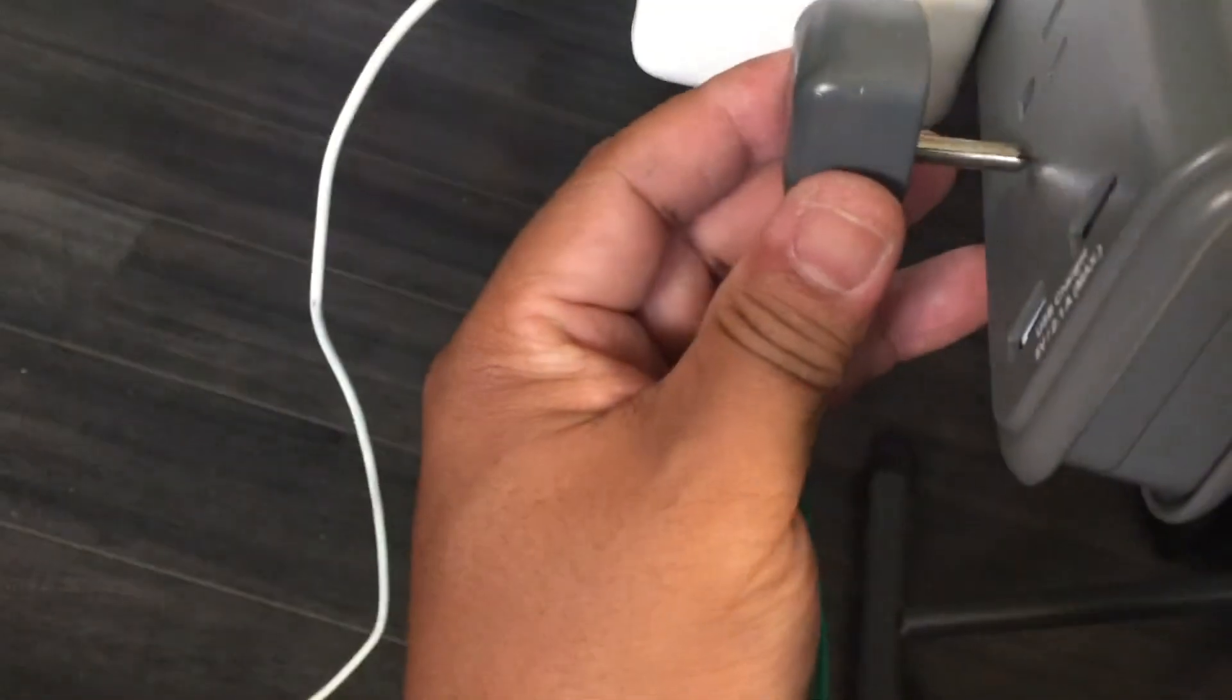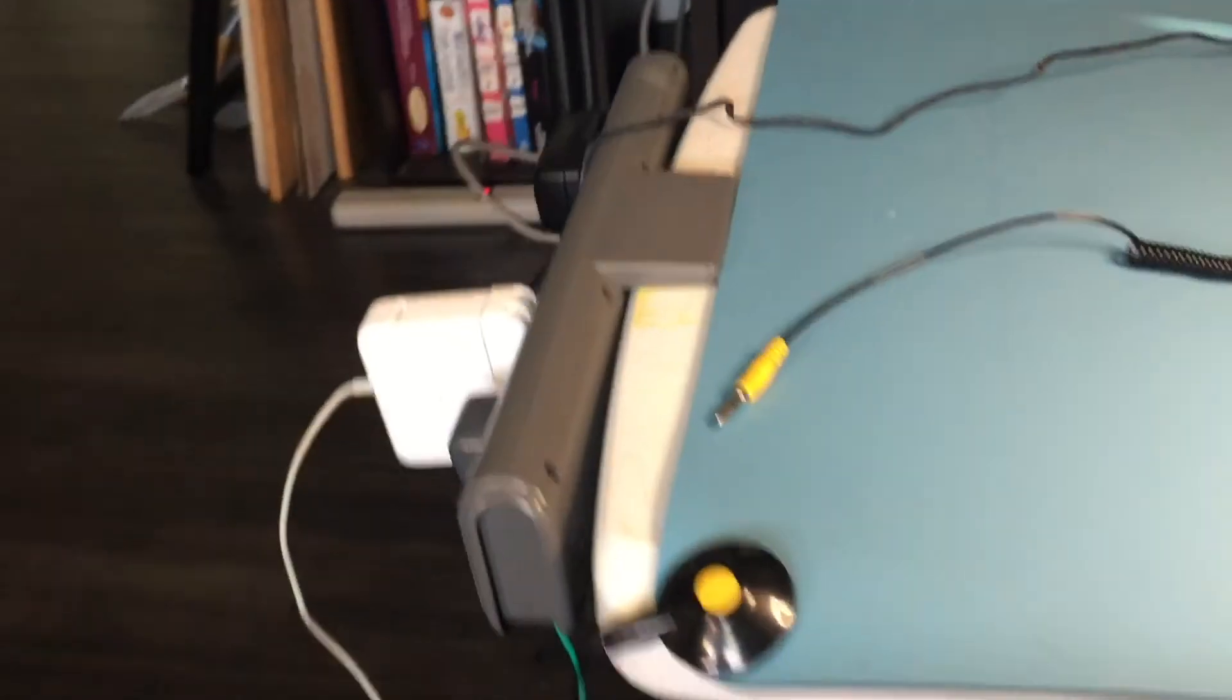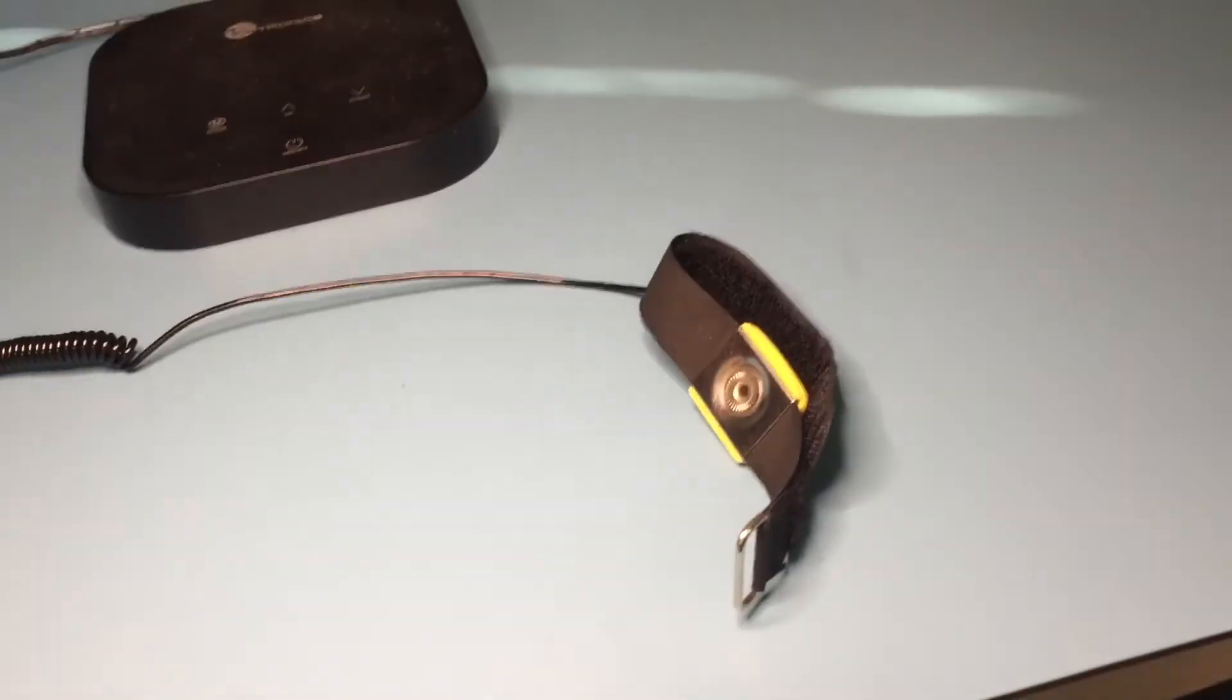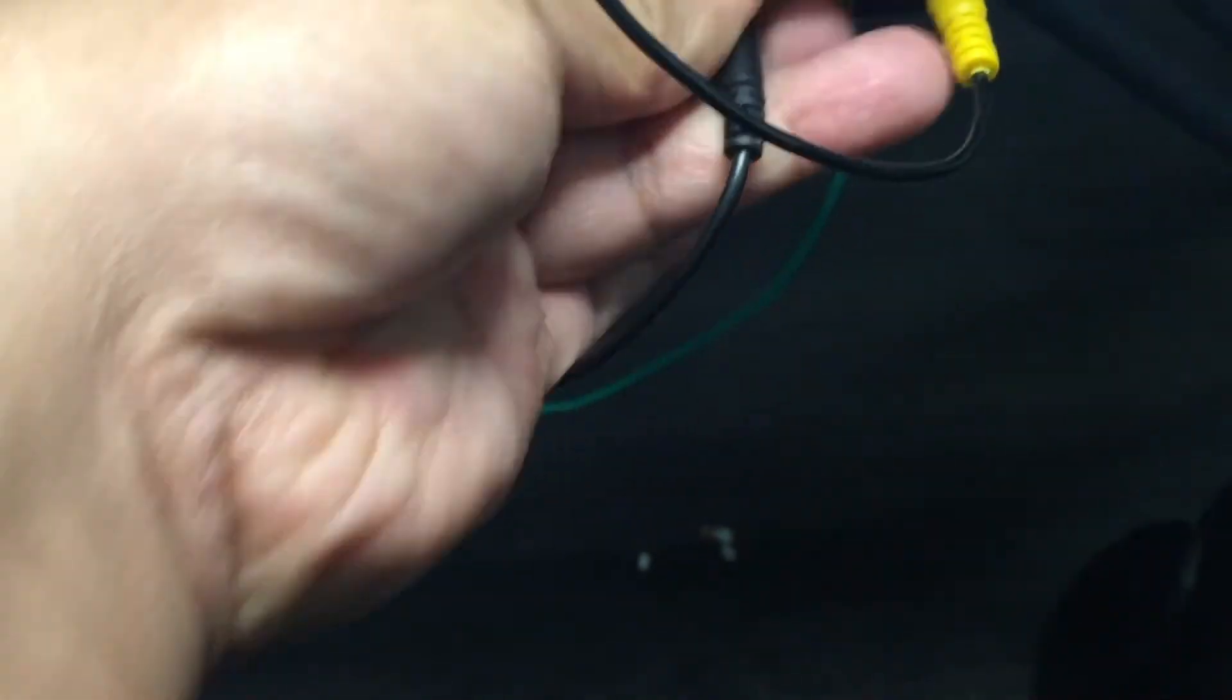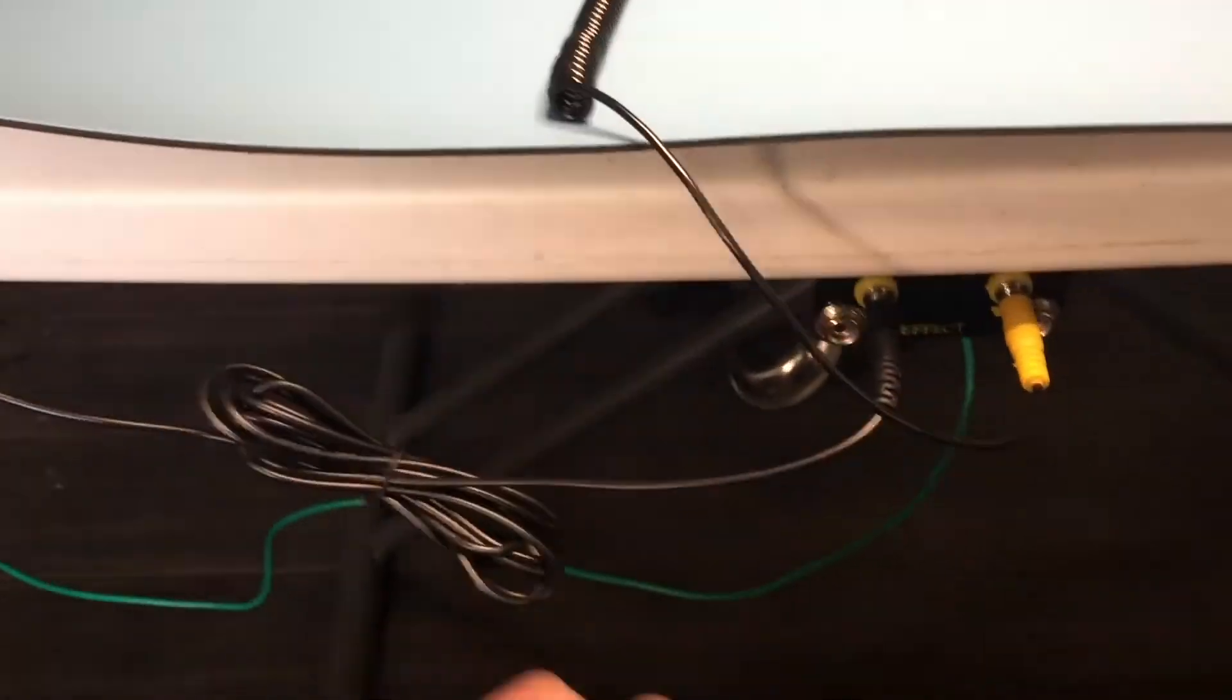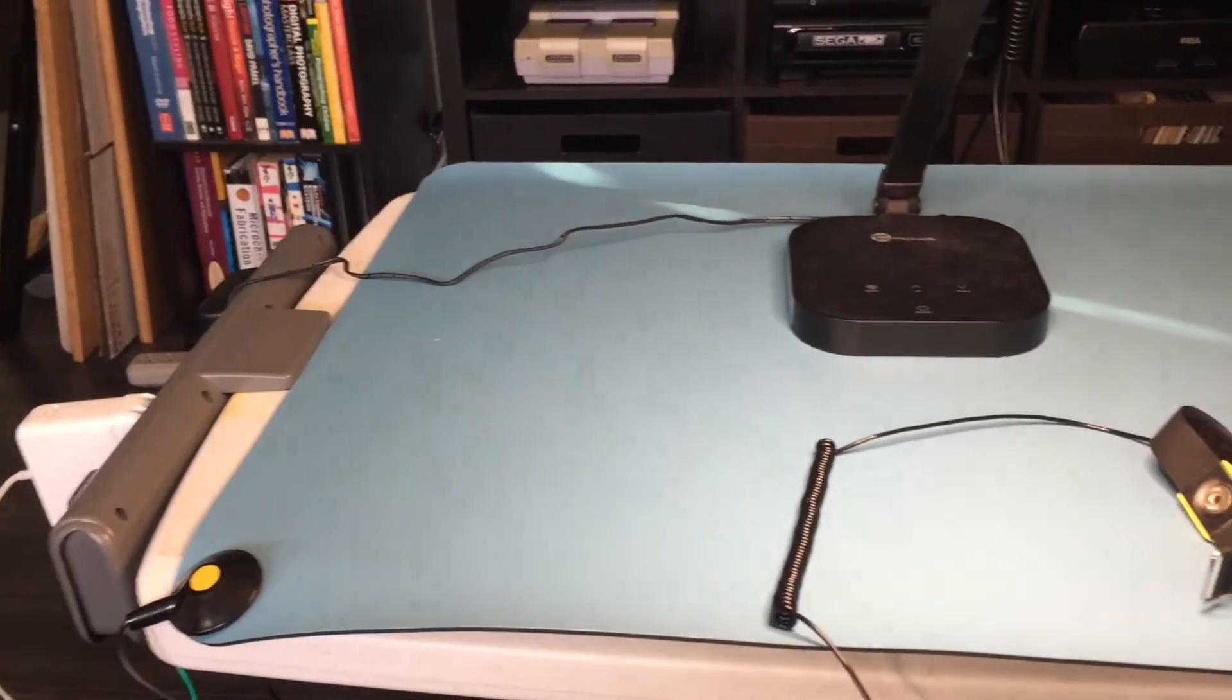Now all that needs to be done is to plug it in. Make sure that the ground on your outlets are properly earth grounded and has no voltage before using your wrist strap. Now all that needs to be done is to plug in the wrist strap and grounding mat. This vinyl grounding mat was also purchased from AliExpress.